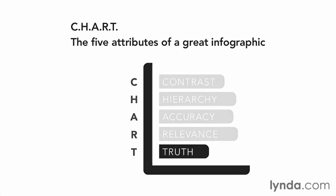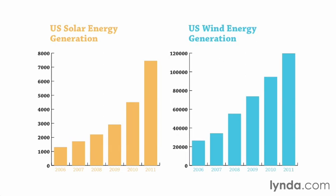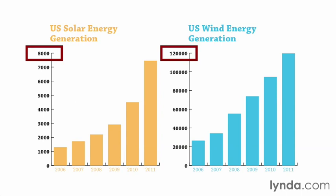The fifth and final key is Truth. Even if your data is accurate, it can be presented in a way that tells a false story. For example, putting two charts side-by-side will immediately force a viewer to compare the two. If the scale of the charts aren't even, the viewer likely won't realize that, leading to a false assumption. You might think that both solar and wind are similar, but they really aren't — each chart uses a separate value scale. Technically the data in each chart is valid, but when presented side-by-side it's easy to think they're quite similar.